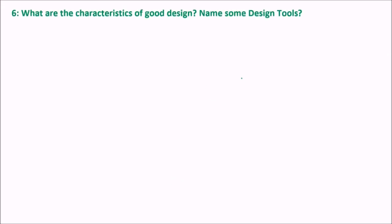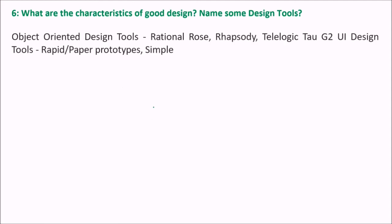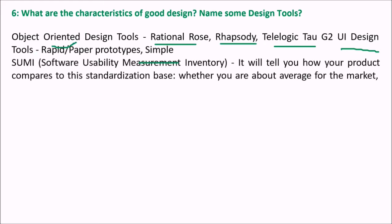What are the characteristics of good design, and what are some design tools? Object-oriented design tools include Rational Rose, Rafaodi, and Telelogic. There are also user interface design tools like rapid paper prototypes, and SUMI — Software Usability Measurement Inventory — which tells you how your product compares to a standardization base, whether it is average, below, or above the market.